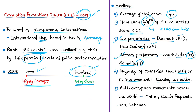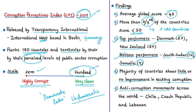The CPI 2019 also shows that corruption is more pervasive in countries where money flows freely into electoral campaigns and where governments listen only to wealthy or influential individuals, making governments undemocratic. This can be related to the Democracy Index of 2019. Last year, millions of people joined hands to speak out against corruption globally, with anti-corruption movements gaining momentum and street protests against corruption seen in Chile, the Czech Republic, and Lebanon.